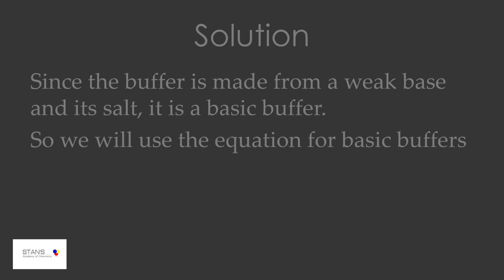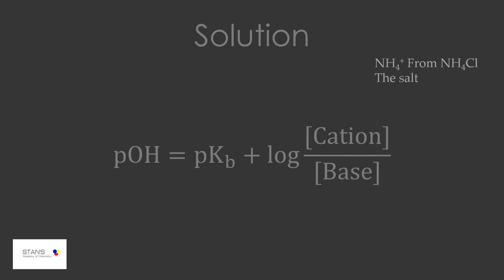We will use the equation for basic buffers: pOH equals pKb plus log of cation by base, or the concentration of ammonium ions by ammonium hydroxide. The cation comes from ammonium chloride and the cation is ammonium ions.